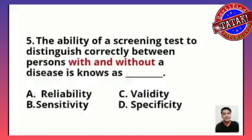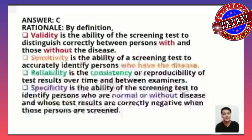Question number five: The ability of the screening test to distinguish correctly between a person with and without a disease is known as A, reliability; B, sensitivity; C, validity; or D, specificity? The correct answer is letter C — validity. Validity is the ability of the screening test to correctly distinguish persons with and those without the disease.